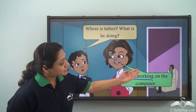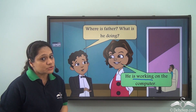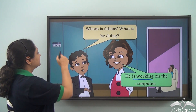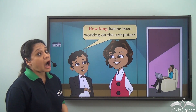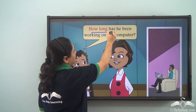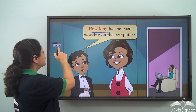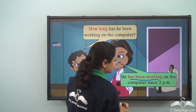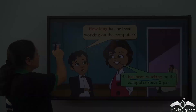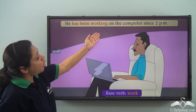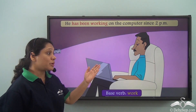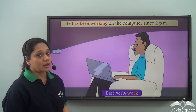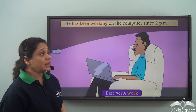You can see that her father is in the next room and he is working on the computer. Then Ravi asks, 'How long has he been working on the computer?' So his sister replies, 'He has been working on the computer since 2 p.m.' He has been working on the computer since 2 p.m. because he has been working since 2 p.m.